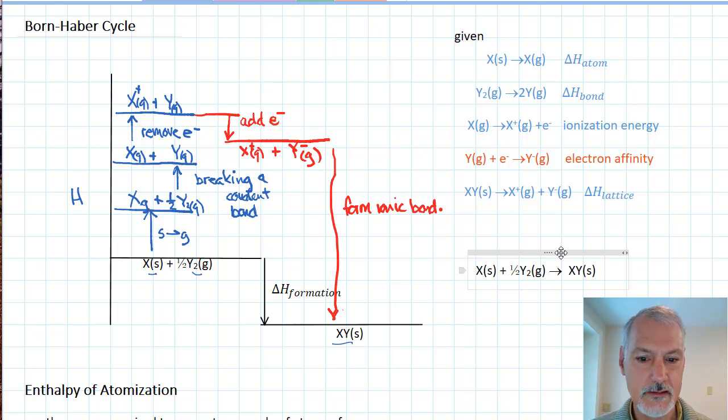If we take a look at these equations, we can apply Hess's law and do some rearrangement to arrive at this equation. The first thing I'm going to notice here is X solid and X solid are present. So I'm going to leave this equation alone.